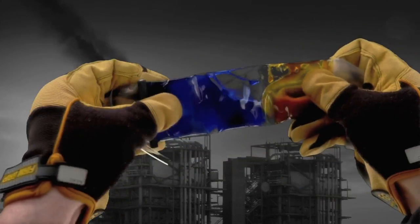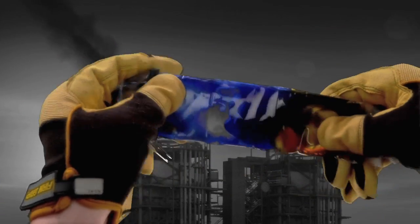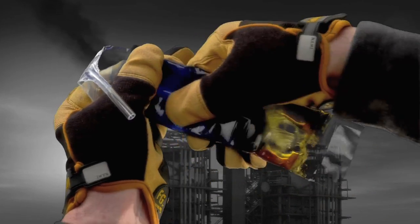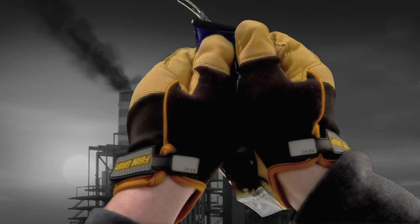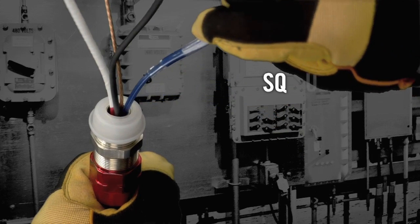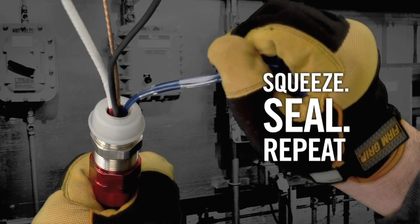With RapidEX liquid resin seal, you can create a barrier seal in a fraction of the time. Simply mix the two-part resin together in its applicator pouch. There's no mess. Then pour the resin in and around the conductors using the applicator tip.